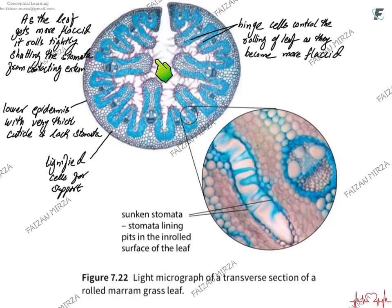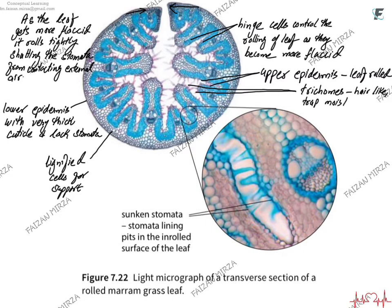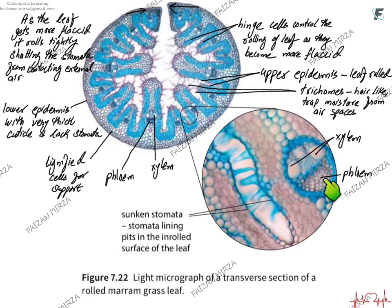The trichomes inside the rolled leaf allow moisture to be captured back. The sunken stomata are located inside grooves or pits on the upper epidermis. When the leaf rolls, the trichomes — which are extensions on the inner surface — trap moisture back into the leaf so water is not allowed to escape. Even in scanty water supply, the plant can survive. You can also see the xylem and phloem of the vascular bundle when examining the cross-section.